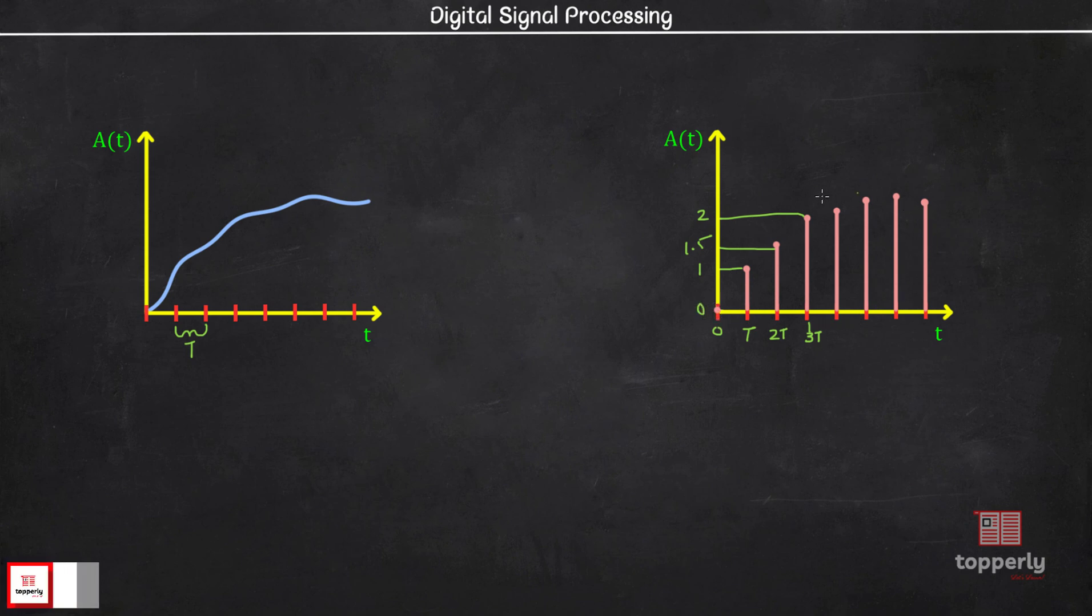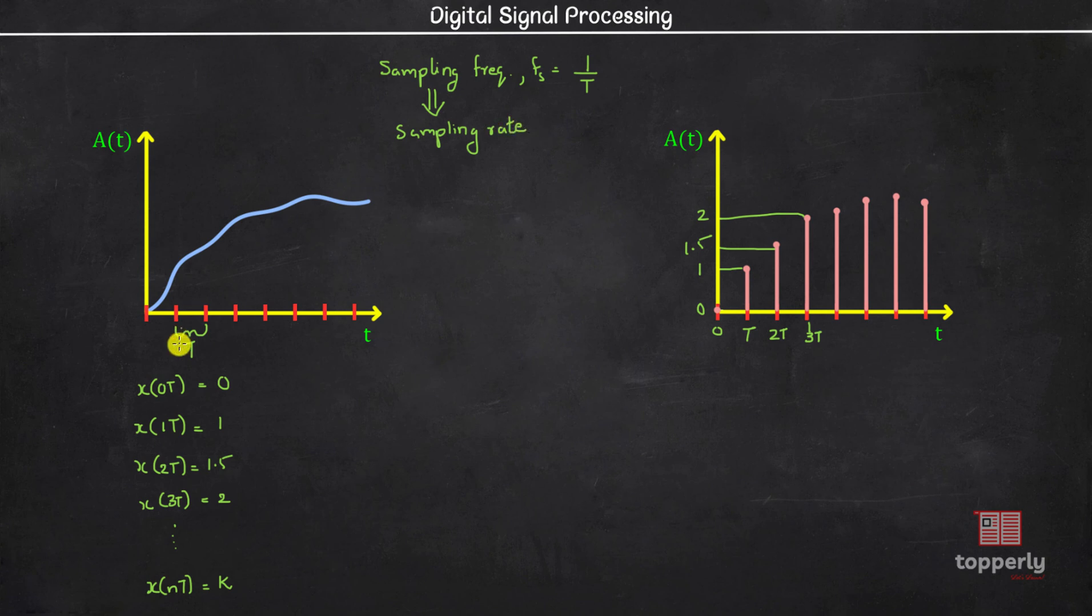Then we can represent this discrete signal as x of 0t equal to 0, x of 1t equal to 1, x of 2t equal to 1.5, x of 3t equal to 2, etc. to x of nt equal to some value k where n is an integer. Also here we can define the sampling frequency fs equal to 1 by t, and sampling frequency is also called sampling rate or sampling period.